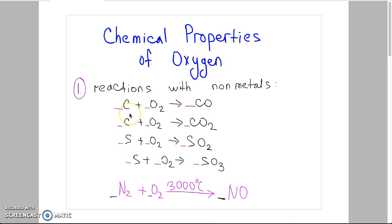For example, when carbon reacts with oxygen, we can have two products: carbon monoxide and carbon dioxide. It depends on the amount of oxygen.